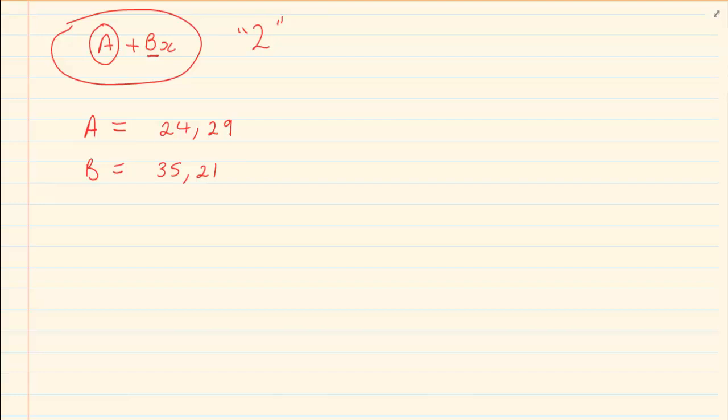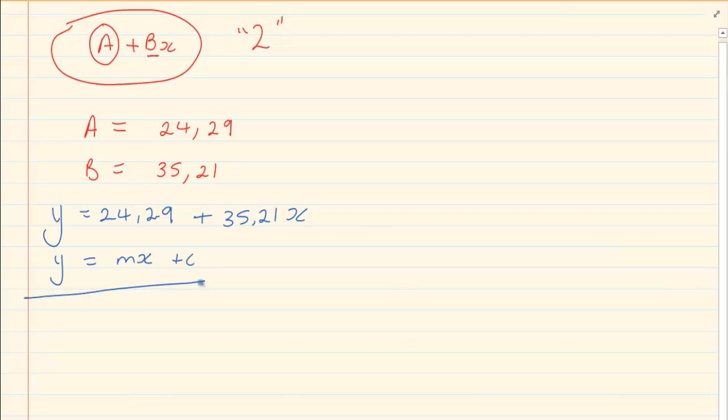So what is our equation? Our equation is going to be 24,29 plus 35,21x. So what is the equation of regression going to equal to? We are going to say the equation of regression is equal to 24,29 plus 35,21x. Remember it is a straight line graph. So what you usually know it as is y is equal to mx plus c. So if you look there is your m, your x and there is your c. What we have done, we have got the equation of regression.